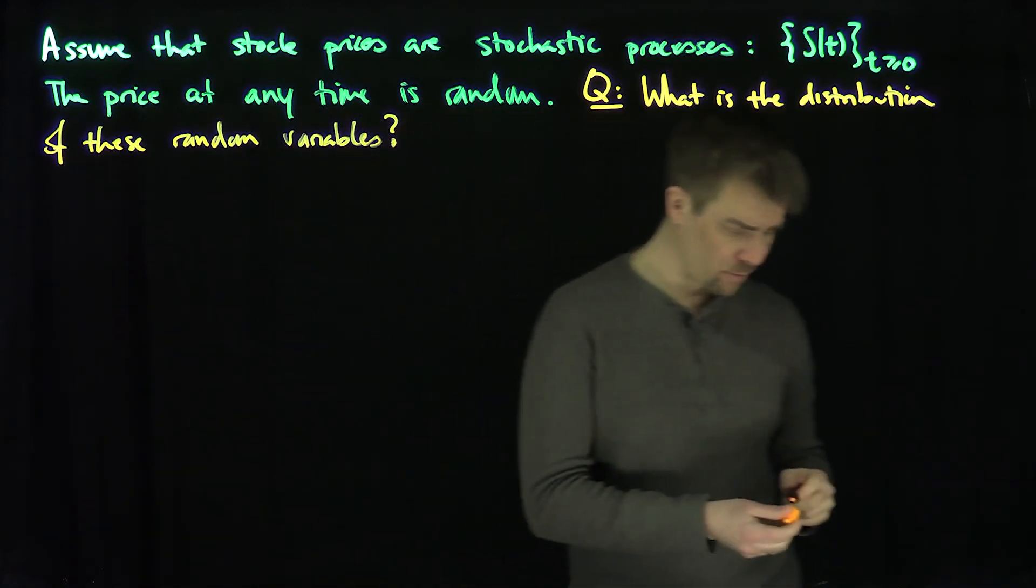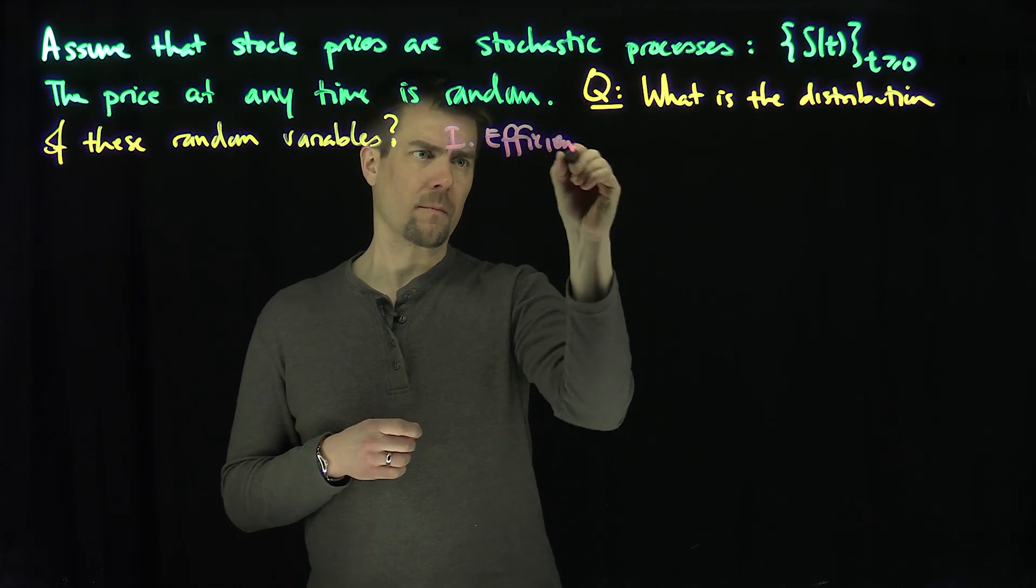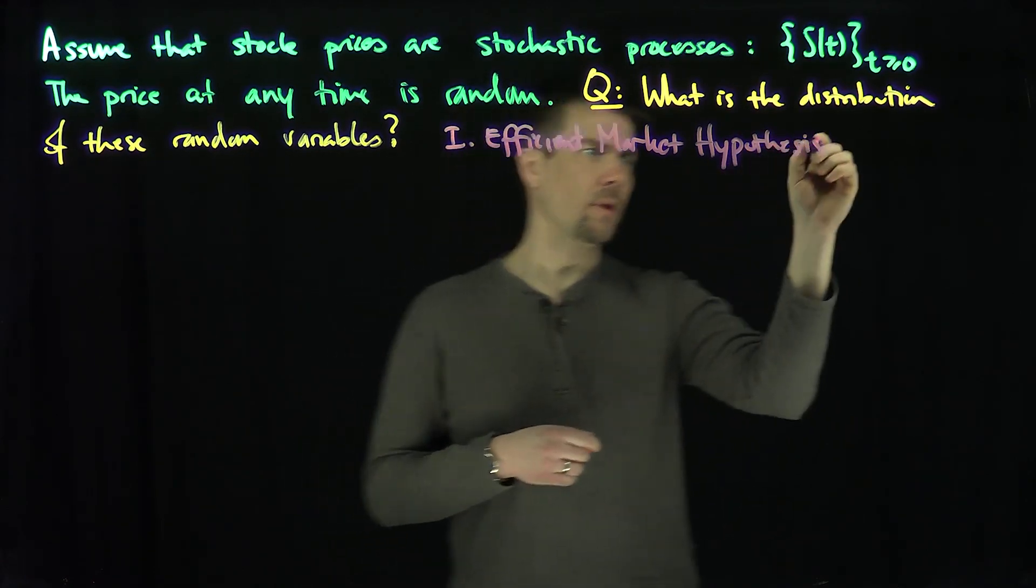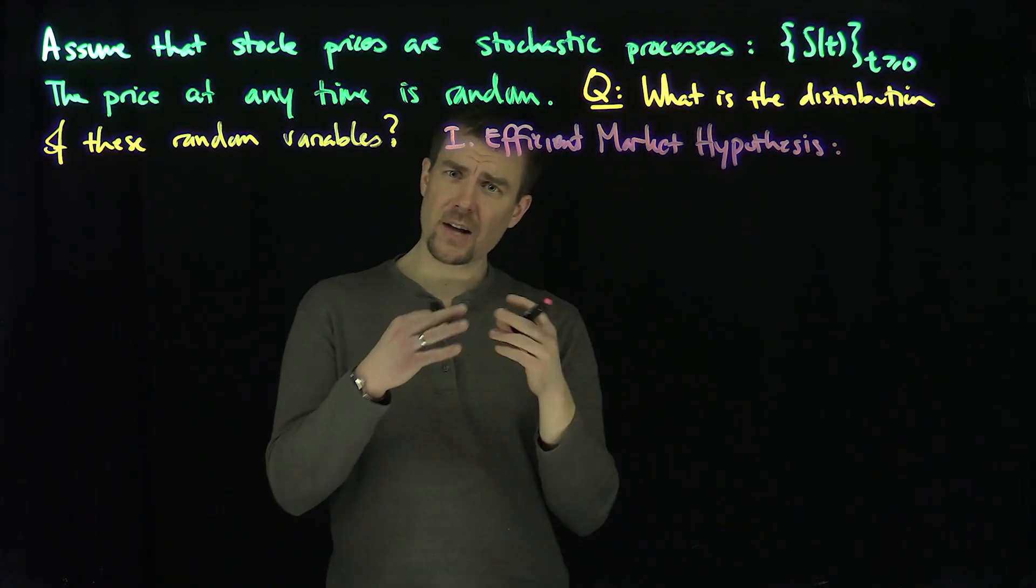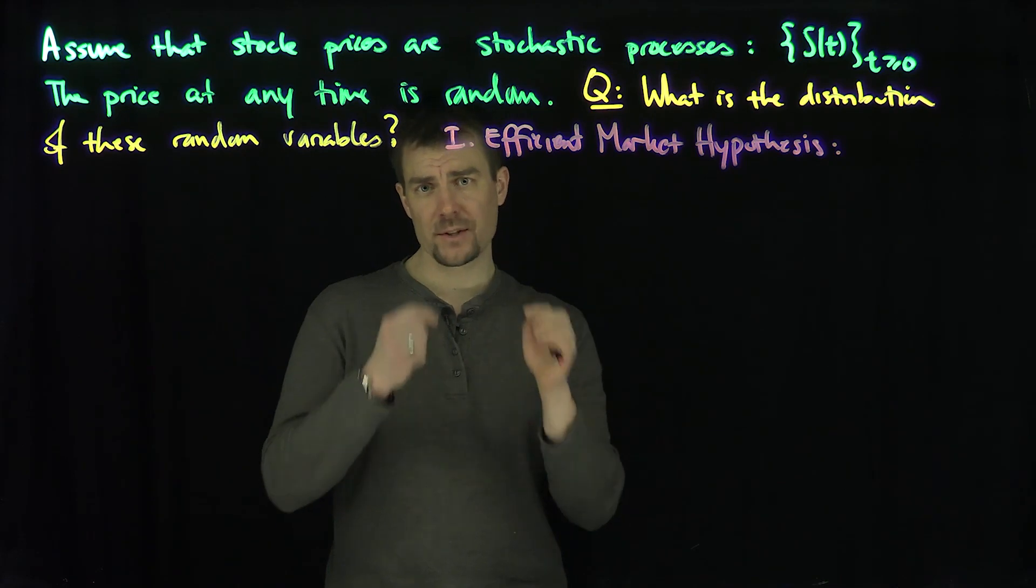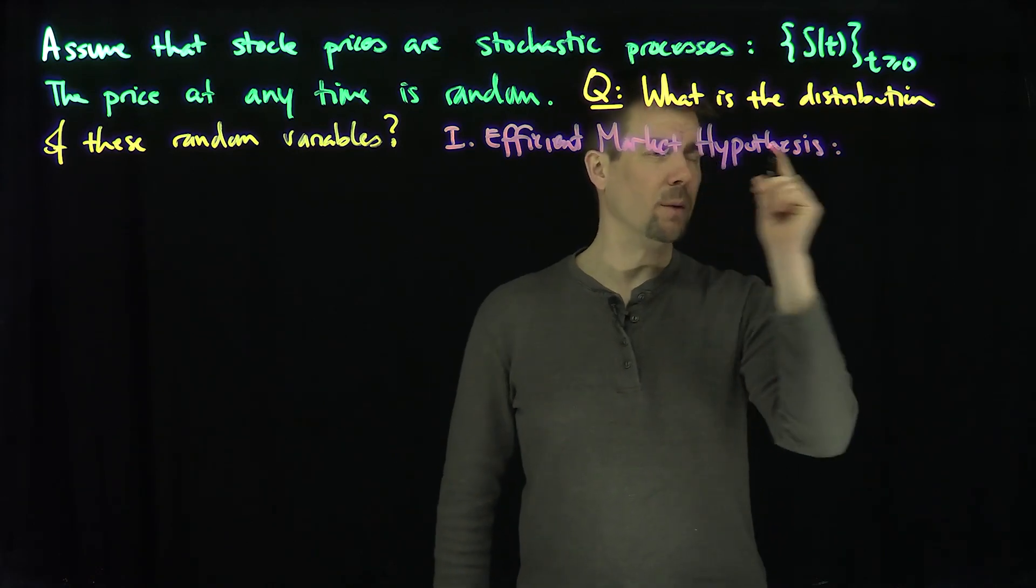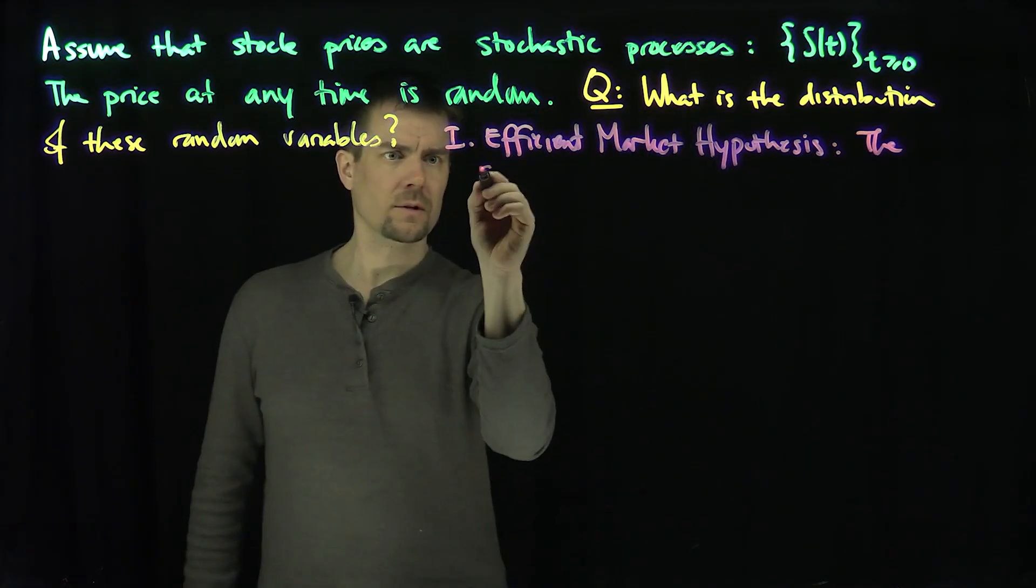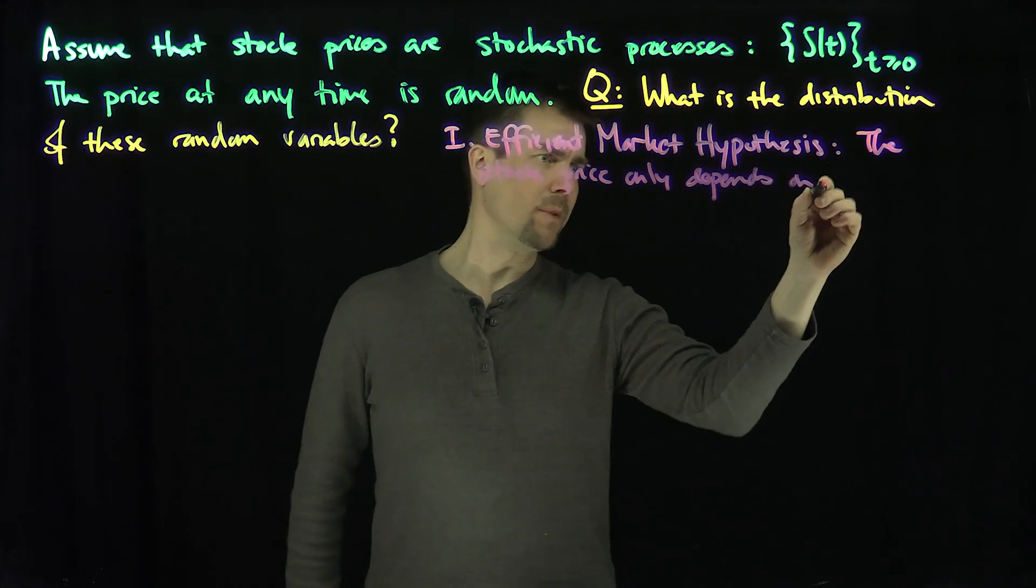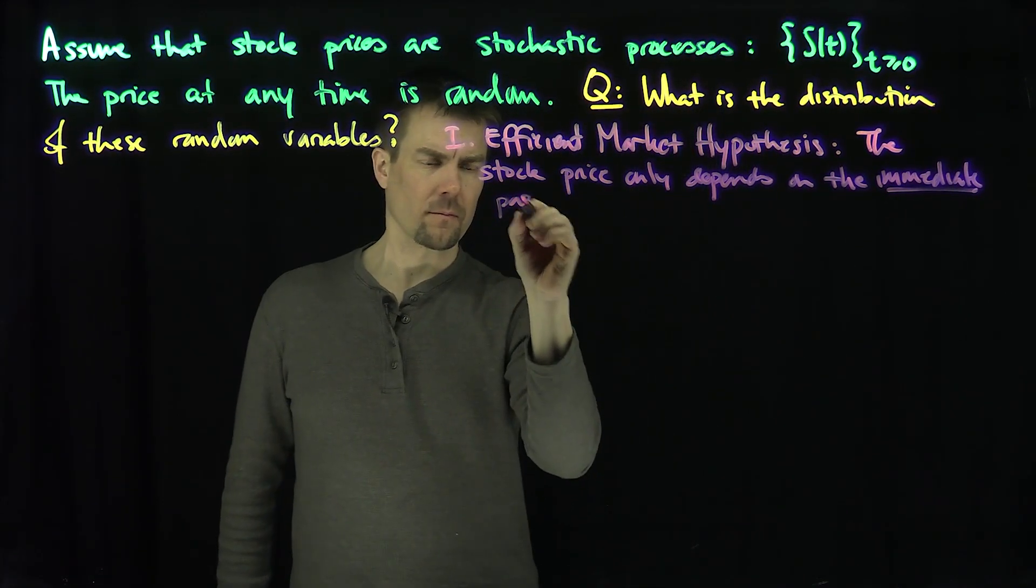The first assumption is called the Efficient Market Hypothesis. It roughly states that the stock price at time 10 shouldn't depend on the stock price at time zero, time one, time two. It should only depend on the stock price at time 10.00001. In other words, this is a Markov assumption that the stock price only depends on the immediate past.